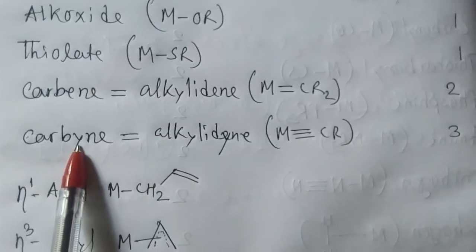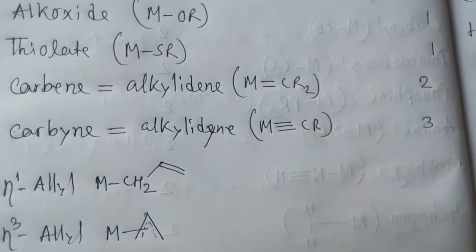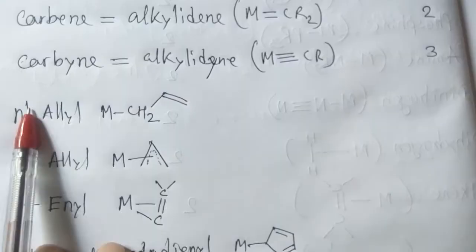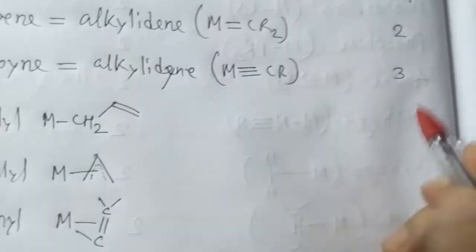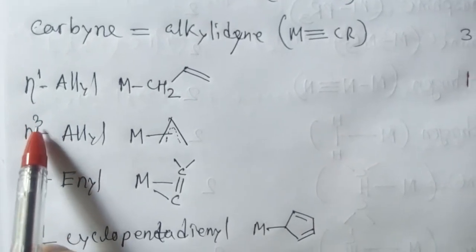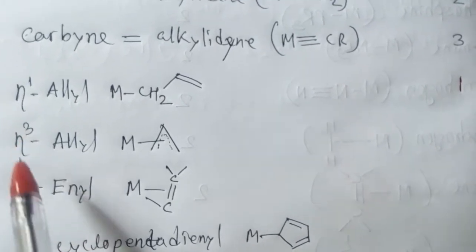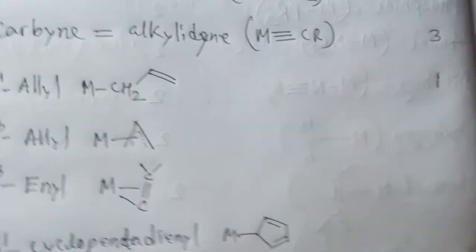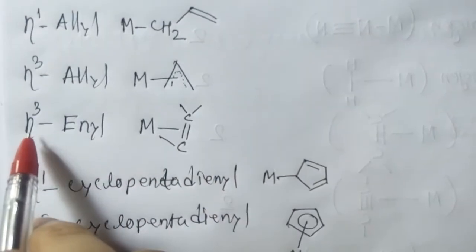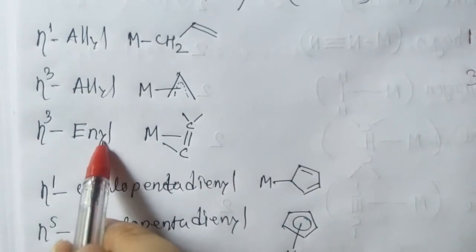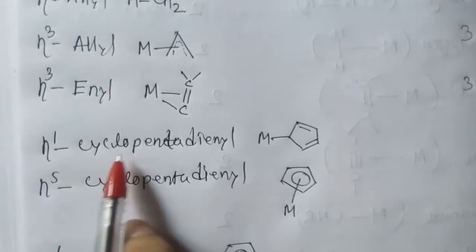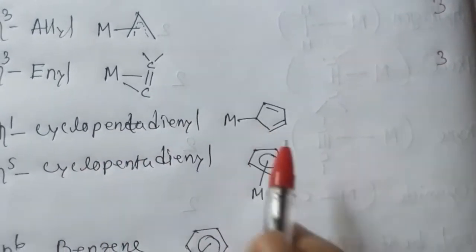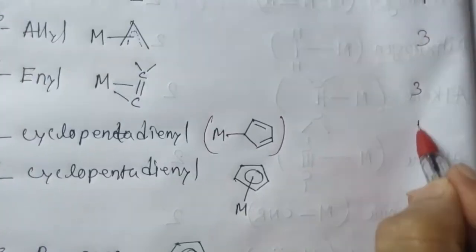Alkylidyne (carbyne) contributes three electrons. η¹-allyl contributes one electron. η³-allyl contributes three electrons. η¹-cyclopentadienyl contributes one electron.